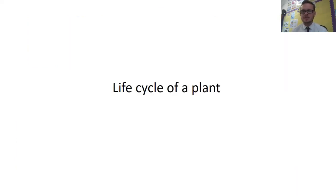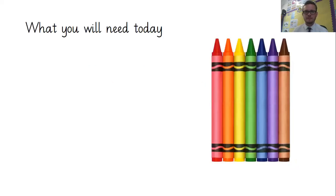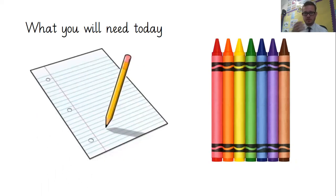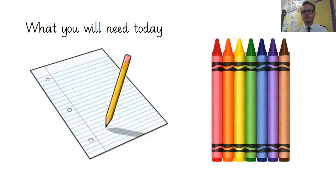Okay, so like I say, today we're looking at the life cycle of plants. What you're going to need: crayons, coloring pencils or felt tips, and a large piece of paper today — don't worry if you've got a smaller one, that's absolutely fine. You also need a pencil and paper because as I'm going through, I want you to stop the video and take notes of what I'm saying, because you're going to need those when you come to create your poster at the end of the lesson.